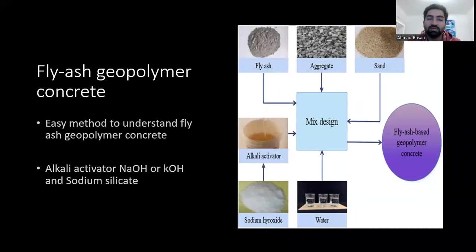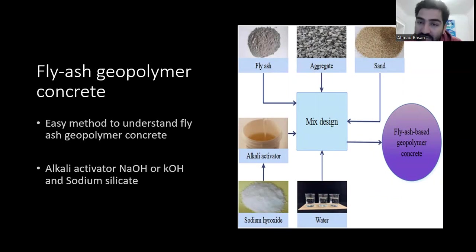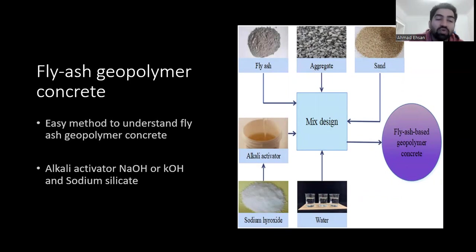This is the basic flow chart of making geopolymer concrete. You can easily understand geopolymer concrete via fly ash. We use fly ash from industries. We also use aggregate sand, which should be raw or possibly salty. Alkaline activators play a vital role, which are made up of sodium hydroxide, potassium hydroxide, and sodium silicate. We also add water.